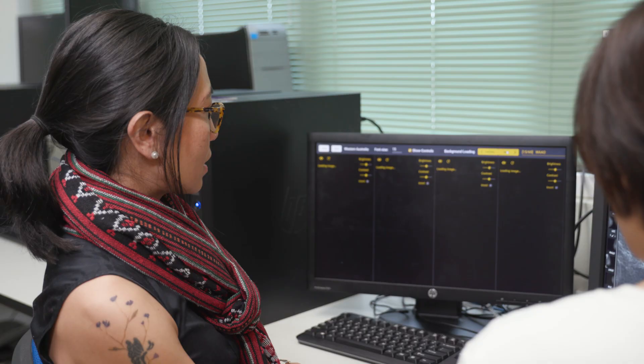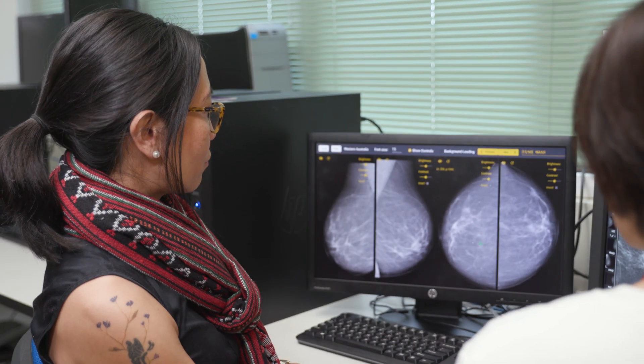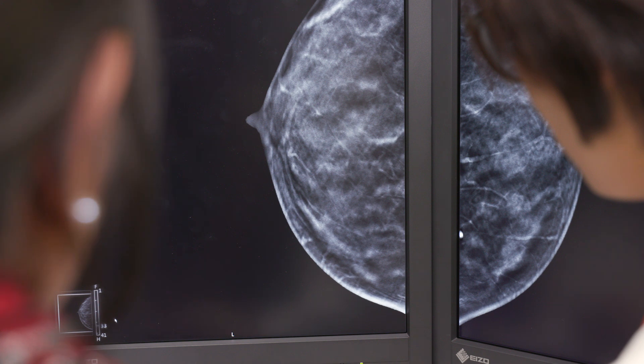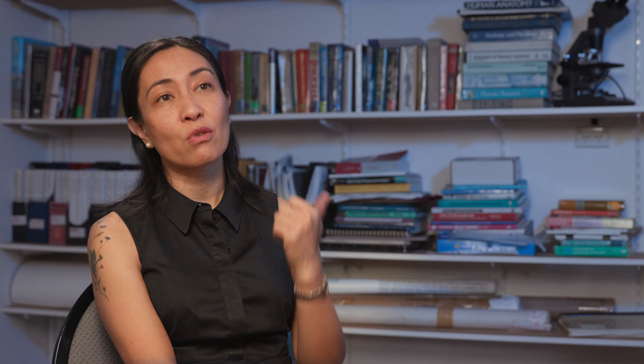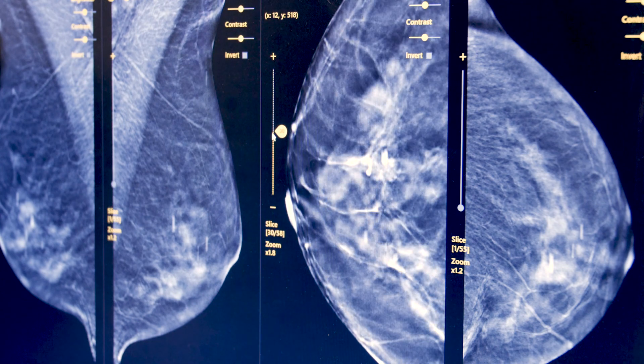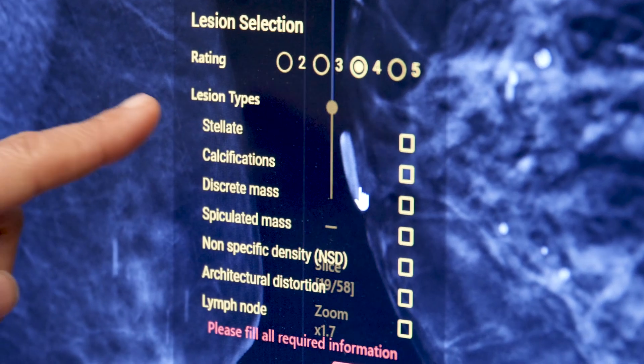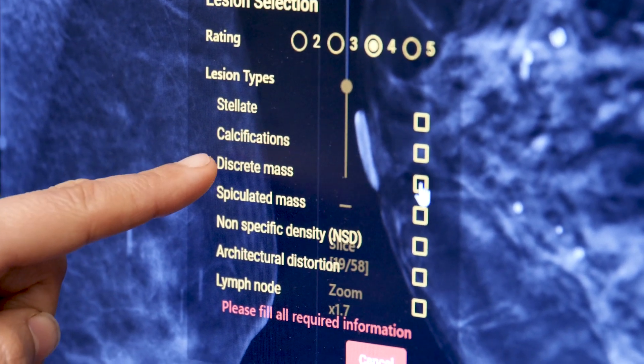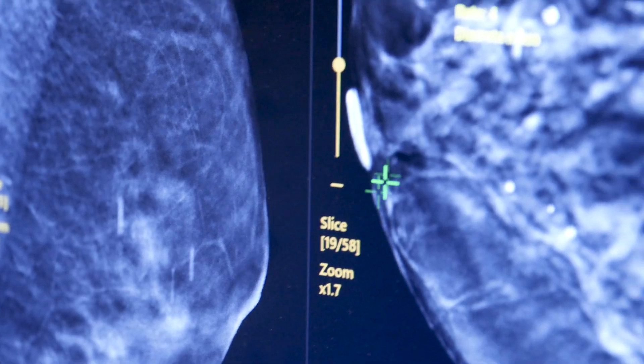The new function that we've been able to put in with SSW is the digital breast tomosynthesis aspect which is 3D mammograms and they can actually go through all of the slices of the breast in full views. In many cases the lesions can be inside of the breast in some particular slices, some particular images,